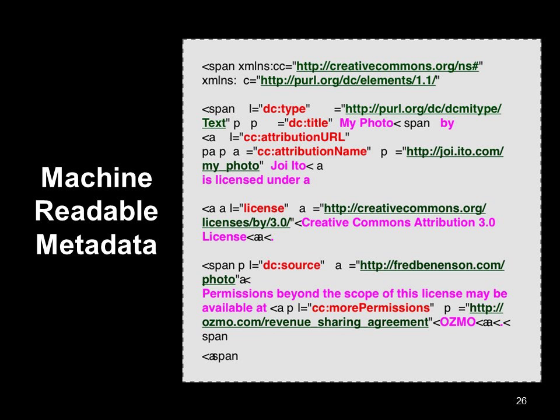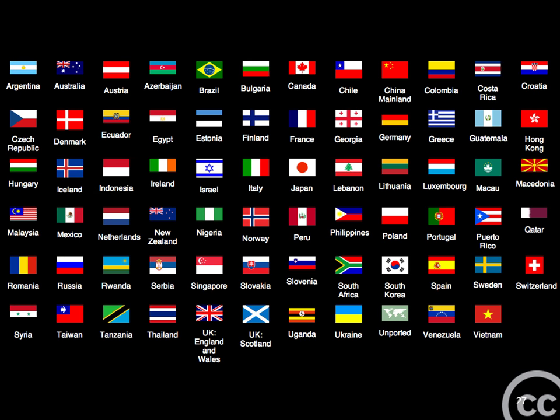The good news is you don't have to come up with this code yourself — we have a tool that generates it for you. All you have to do is copy and paste it into your webpage if you are publishing your work under Creative Commons licenses. Our licenses are operable around the world and have been aligned to international Berne Convention laws, so Creative Commons licenses exist built on top of current copyright law.